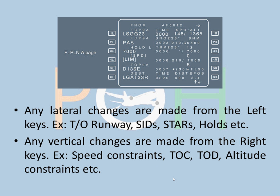On the MCDU on your pedestal, any lateral changes made in the flight plan are done from the left-hand side keys — for example, takeoff runway, SIDs, and STARs. Any vertical changes are made on the right keys — for example, speed (148, 210), top of climb, top of descent, and altitude constraints such as a restriction to be at 7,000 feet over a certain point.